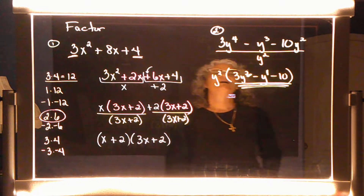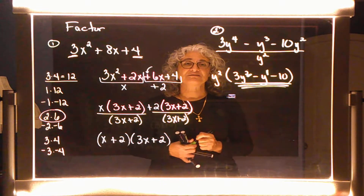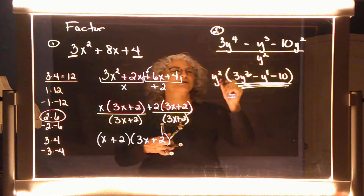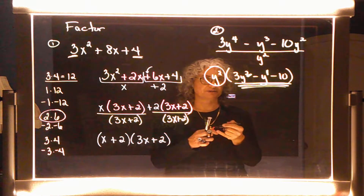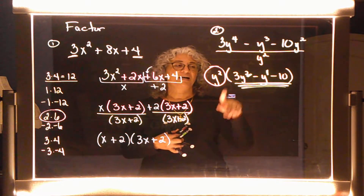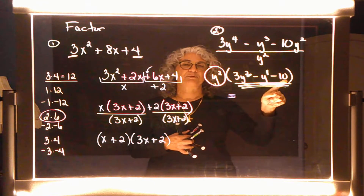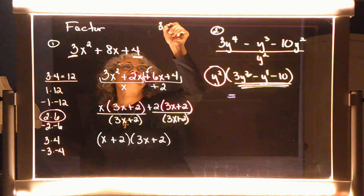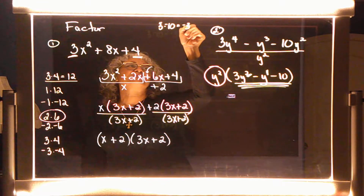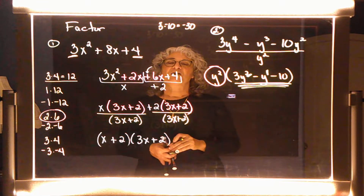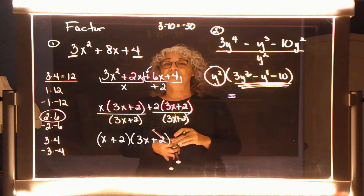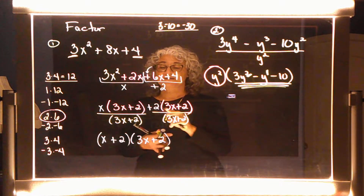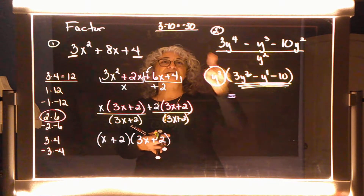So how do we start? I'm going to hold on to the y squared for a second and leave it alone. I take the first term, which is three, and multiply by the last term, which is negative 10, giving me a negative 30. That means I have to look for everything that multiplies to a negative 30, because the middle two are supposed to multiply to a negative 30. Starting with one.